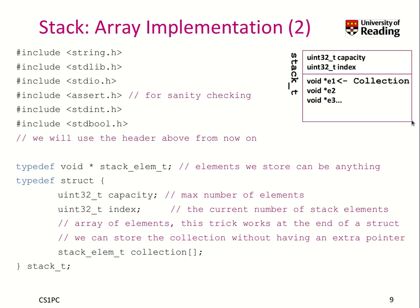Let's look at the data structure in memory. We have two elements: capacity and index, as defined in the struct. If we have a collection with three elements, they would be directly part of this stack object. The collection pointer points directly to the first element because it's just an array, so we don't need to store an additional array of pointers. If you recall from our C lecture about pointers, an array is similar to the implementation of pointers, but the difference is that the compiler remembers the location. If I had used a collection star instead, I would have to store externally an array of pointers to the stack elements — but here, it's all embedded in the structure.